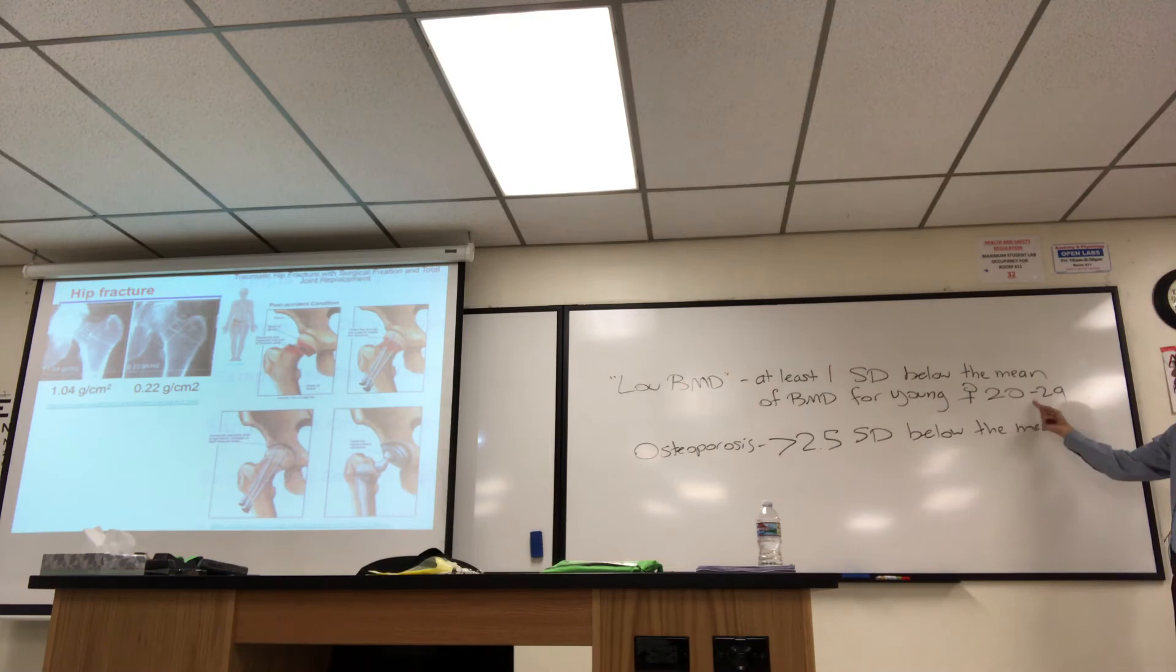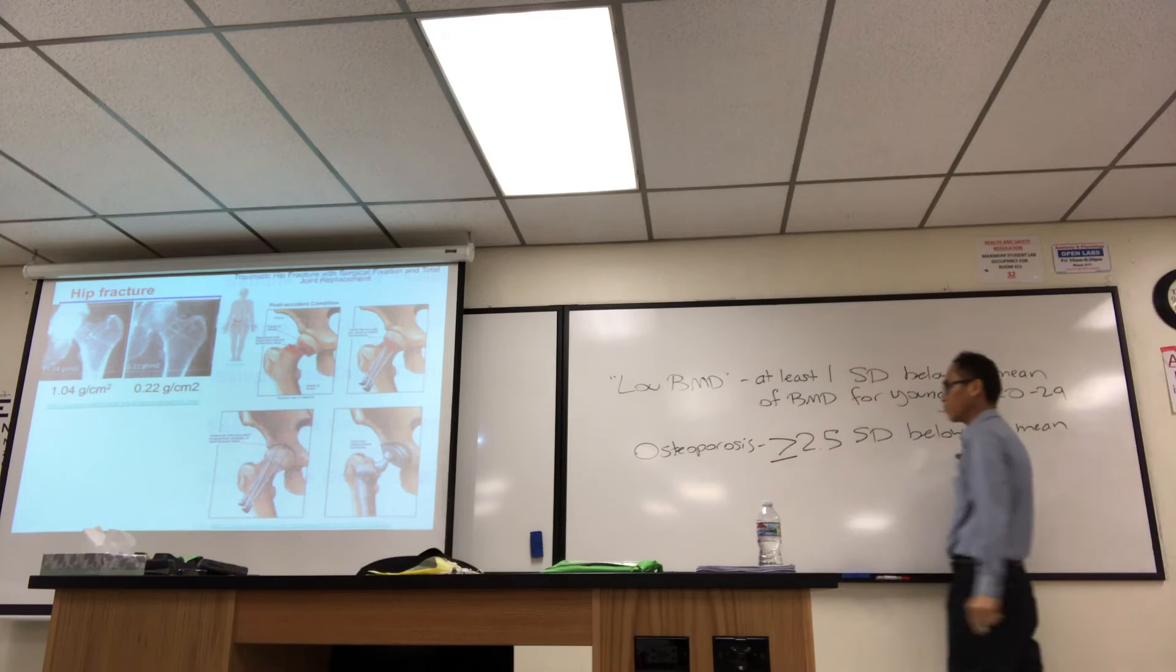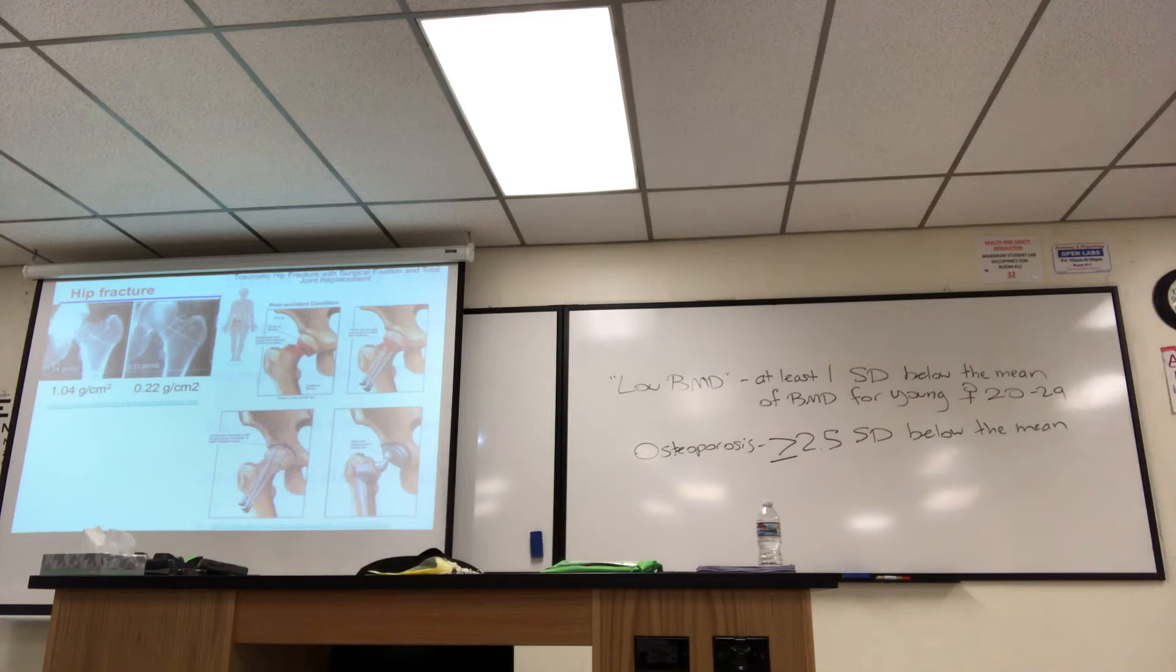So basically, if you're at least 1, 2, 2.1, 2.2, 2.3, 2.4, consider low BMD. Get to 2.5 or more, you're considered osteoporotic. So maybe I should put equal sign, you know, greater than or equal to here. Just to give you an idea from a clinical standpoint that they quantitate these things. All right.